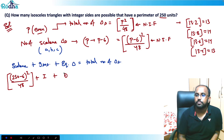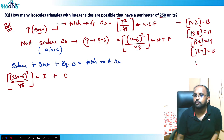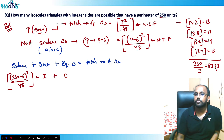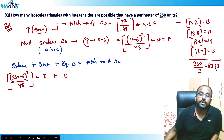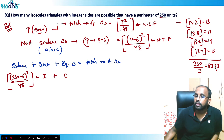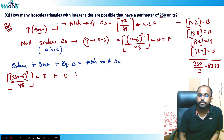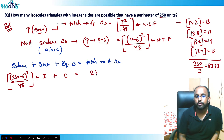The number of equilateral triangles is zero, because 250/3 = 83.33, which is not an integer — so no equilateral triangle is possible with perimeter 250.